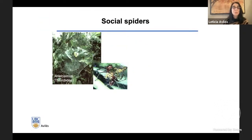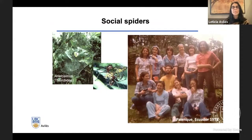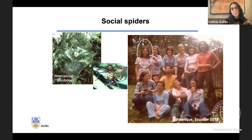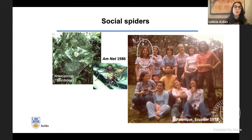The first species of social spider that I ever met is this species, Anelosimus eximius, shown in the photos. It's a species that I was introduced to when I was an undergraduate in Ecuador at the Pontificia Universidad Católica del Ecuador. That's me, practically a kid back then, in 1978. With the research I started as an undergraduate, I published my first paper on social spiders on this species just as I entered grad school — my first publication ever, in 1986.